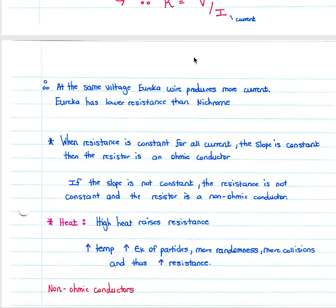In the IEB syllabus, you will mostly encounter ohmic conductors. They may ask you about non-ohmic conductors — just be able to explain that the resistance is not constant. Beyond that, you don't need to know much more about non-ohmic conductors.